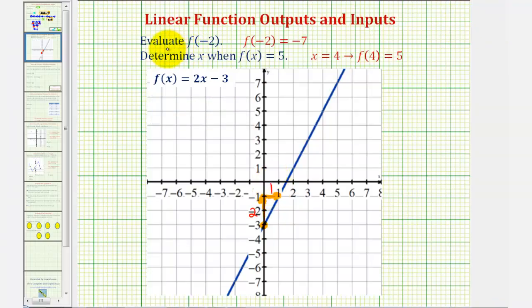But now going back to our problem we first found that f of negative two equals negative seven, which means when the input is negative two the output is negative seven. This would correspond to the point where the x coordinate is negative two and the y coordinate is negative seven.